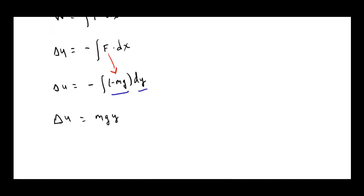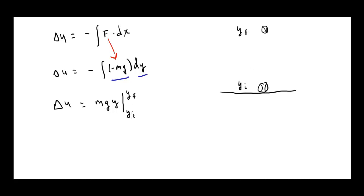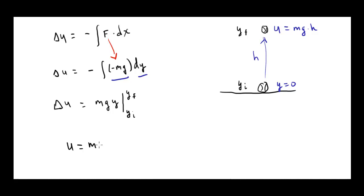Now, one thing to note: this will be mg times y, evaluated from y-initial to y-final. If I lift the ball, and this is y-initial and this is y-final, I evaluate between them. Usually we call the initial position the reference point — y equals zero — in which case you can just say the potential energy at that point is mg times h, where h is the height that the ball was lifted. So frequently this equation reduces to: the potential energy due to gravity equals mgh. We'll use this equation quite a bit in the next few weeks.